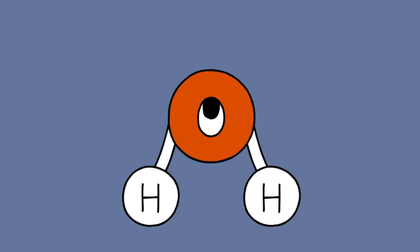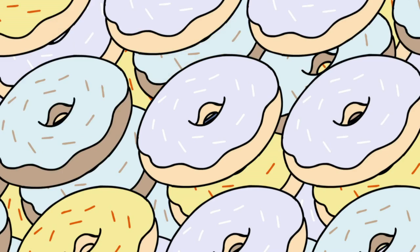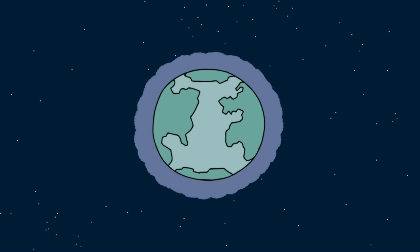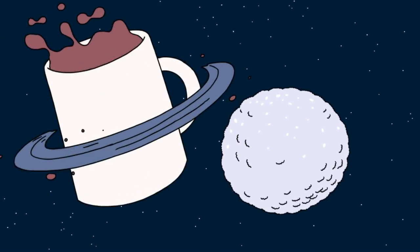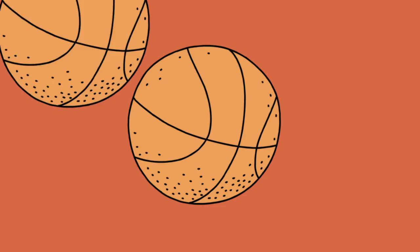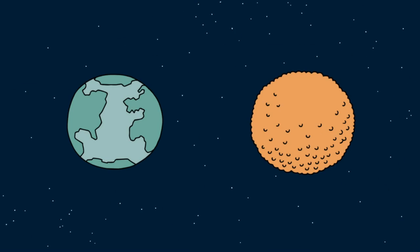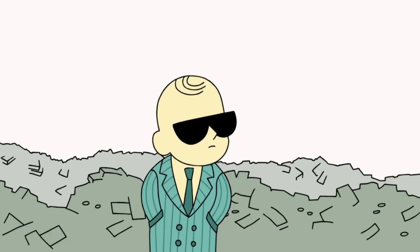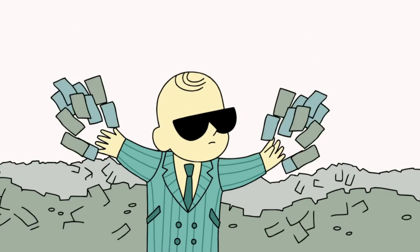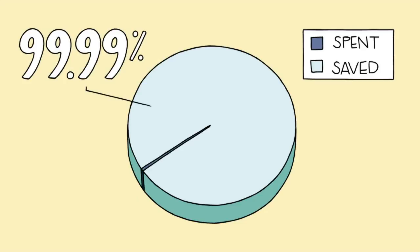Maybe this will help. Exchange the water particles for donuts. If you had a mole of donuts, they would cover the entire Earth to a depth of 8 kilometers, which is about 5 miles. You'd really need a lot of coffee for that. If you had a mole of basketballs, you could create a new planet the size of the Earth. If you received a mole of pennies on the day you were born and spent a million dollars a second until the day you died at age 100, you would still have more than 99.99% of your money in the bank.